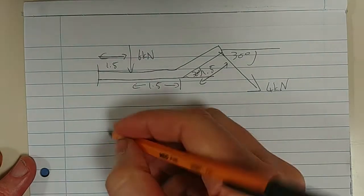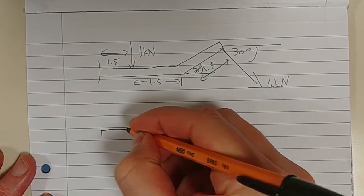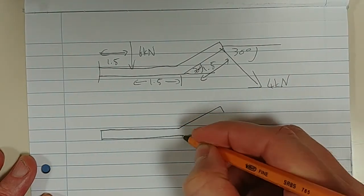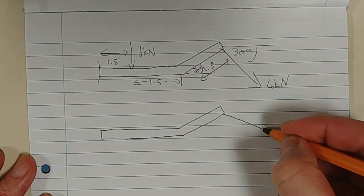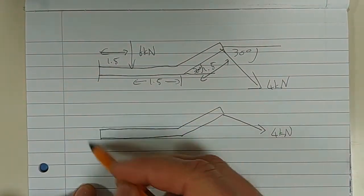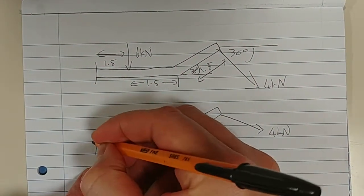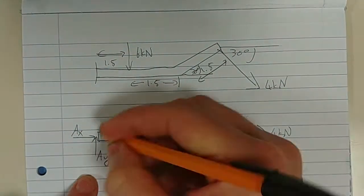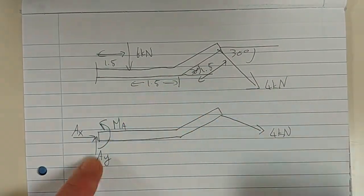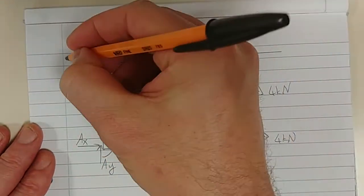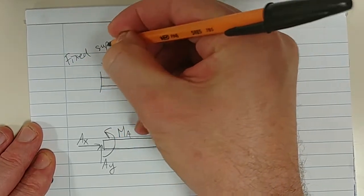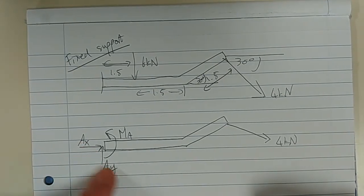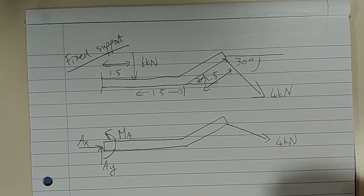So, let's redraw this guy. I know I'm maybe doing a little bit too much work here. But there's my 4 kN. So, how do I replace this? I need to replace a fixed support with the Ay, with the Ax, and with a moment. So, a fixed support, let's just write it there. Fixed support. You need to replace it with forces in the x and y and a moment.